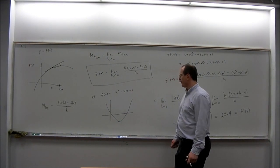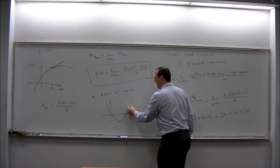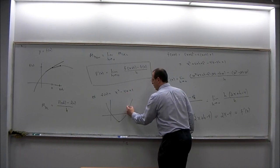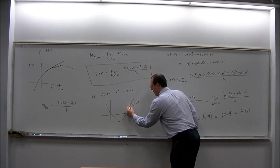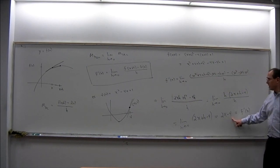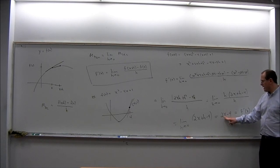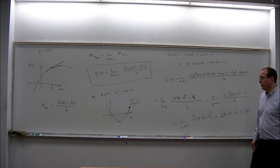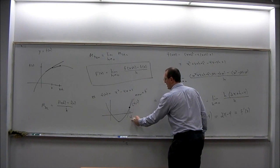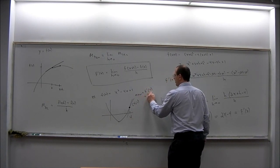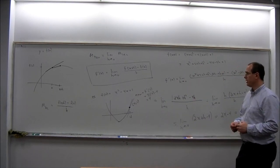For example, if we pick the point where x equals 4, plugging 4 into the function gives y equals 16 minus 16 plus 1, so y equals 1. That's the point (4, 1). At that point, the slope of the tangent line is f prime of 4, which equals 2 times 4 minus 4, which is 4. So the slope of the tangent line at that point is 4.